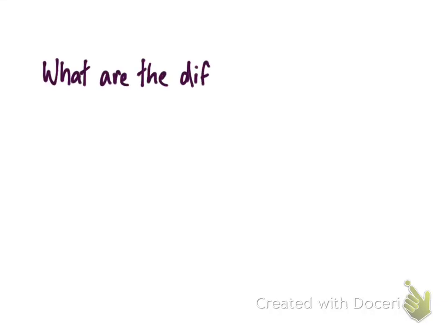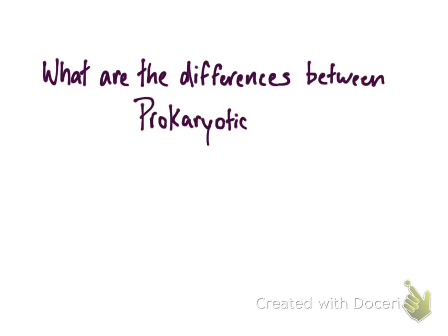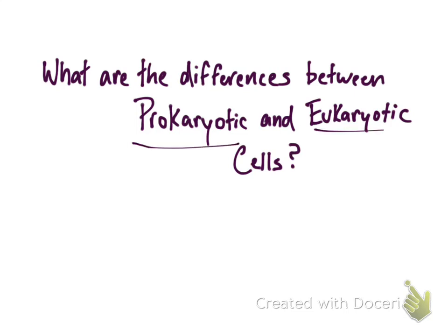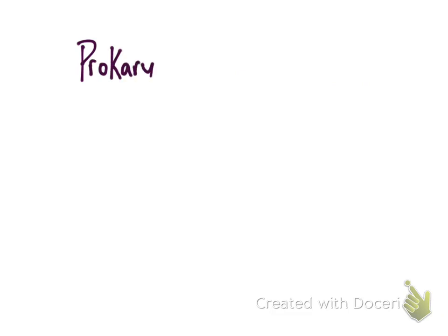Hey guys, this is Nikita Sivakamari, and today we're going to be talking about what are the differences between prokaryotic and eukaryotic cells. First of all, what is prokaryotic and what is eukaryotic? Well, prokaryotic and eukaryotic cells is the broadest classification of cells. All cells are either prokaryotic or eukaryotic, and that's what we're going to be talking about today. So let's go ahead and compare the two.